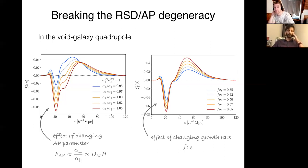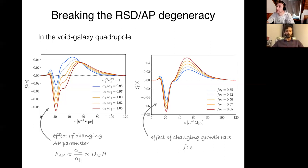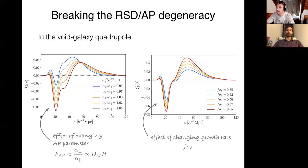In the galaxy power spectrum, at a wide range of scales it's quite close to a power law, which means it doesn't have features. Where you don't have features, shifting the scales moves a curve left or right, and those two effects are quite degenerate — it's hard to tell them apart. What does help in the galaxy power spectrum is the big feature from the BAO peak. In this case, we've got a feature in the quadrupole, and that feature helps us to distinguish these two effects.